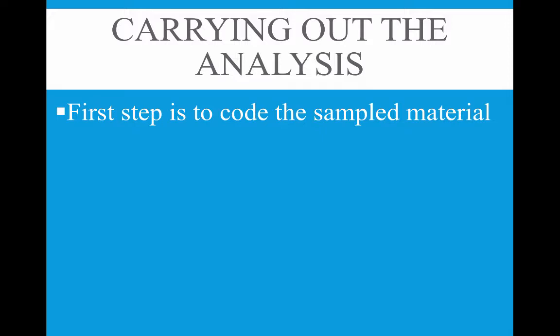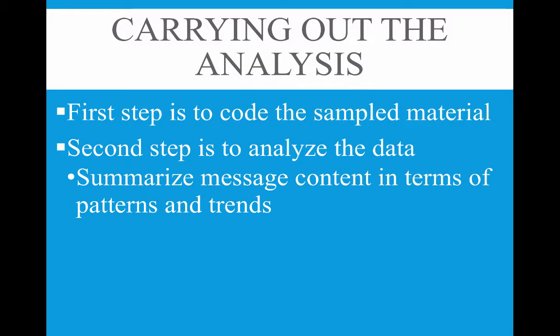Once you carry out the analysis, the first step is to code the sample material, using either a code book for manual coding or computer software with pre-programmed vocabulary dictionaries. The second step is to actually analyze the results — summarize message content in terms of patterns and trends, relating content variables to one another or to some other variable. You then look deeper to see which demographic groups have which patterns — for example, comparing embedded military journalists versus independent journalists versus local-area reporters.